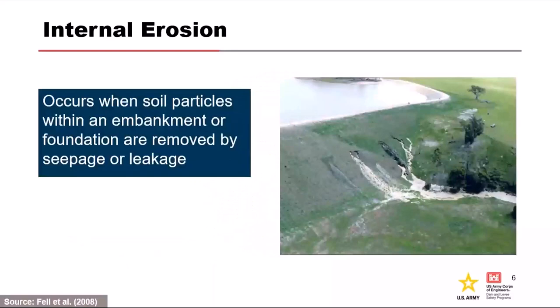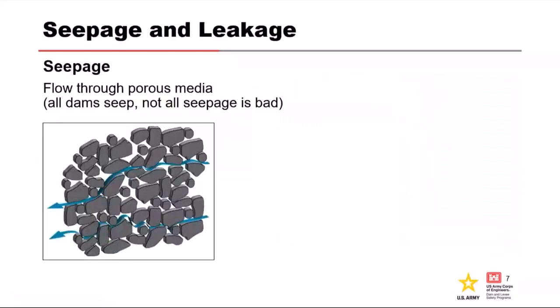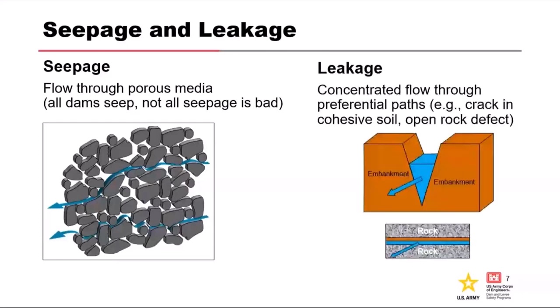Seepage becomes a concern if it's carrying material. Internal erosion occurs when soil particles from within an earthen embankment or its foundation are removed by seepage or leakage to an exit point — that's what internal erosion looks like when you're getting seepage out of the embankment carrying material. So what's the difference between seepage and leakage? Seepage is flow through a porous media and leakage is concentrated flow through a crack or an opening.